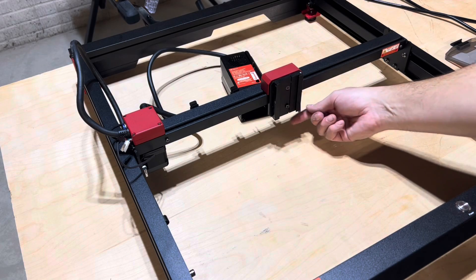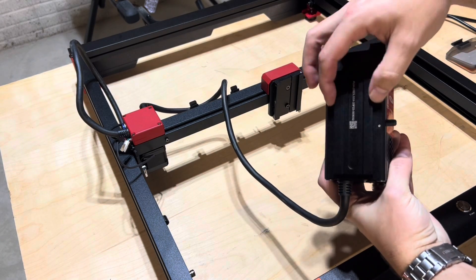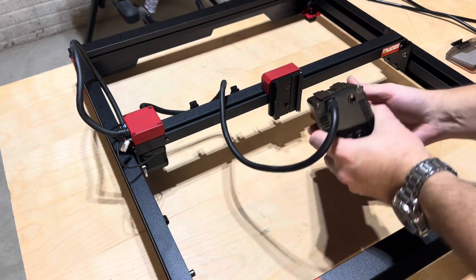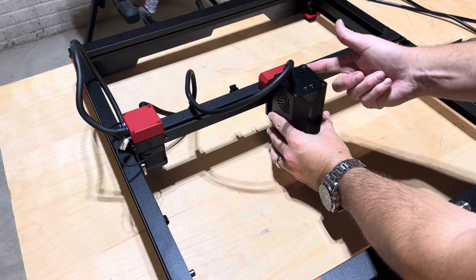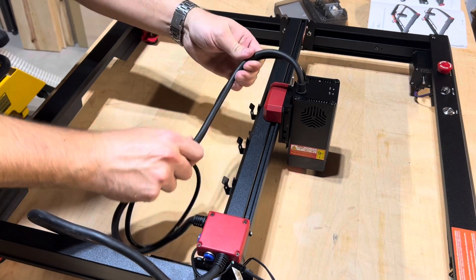Step five is mounting the laser assembly. Pull down the lever and install the laser module on the fixture. Lift up the lever to secure it into place. Insert the air pipe into the hole of the laser module.